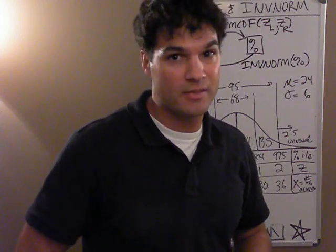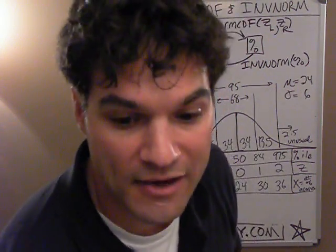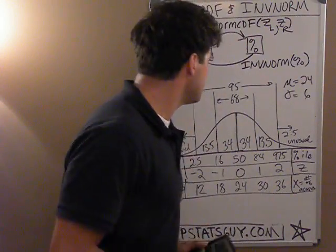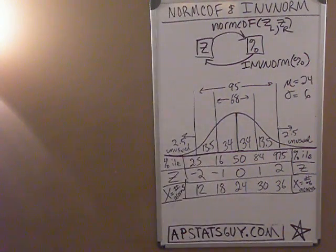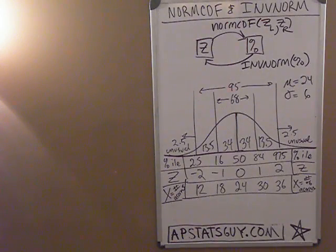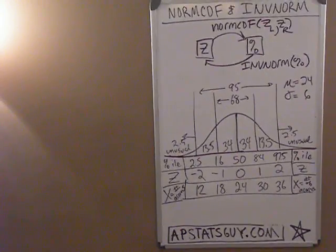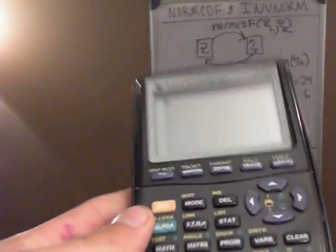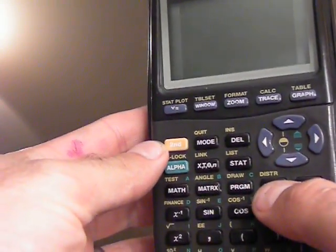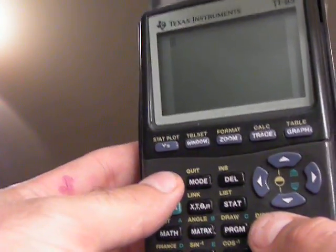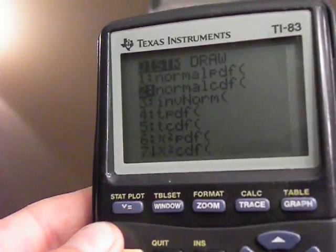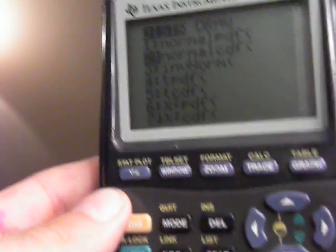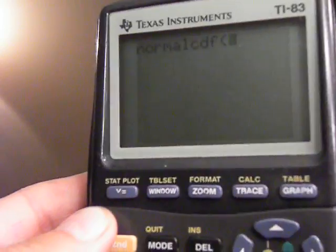The calculator does it for you, which is easier. To find it, hit second, then DISTR — distributions. Norm pdf and norm cdf come up. We're going to talk about norm cdf first. I scroll down and hit 2 or enter, and I have norm cdf. It needs a Z-left and Z-right — you put two Z-scores in.